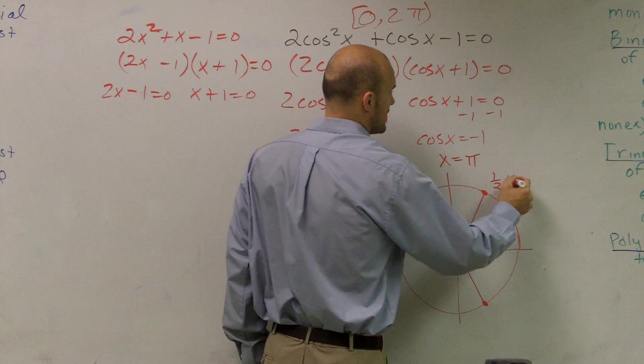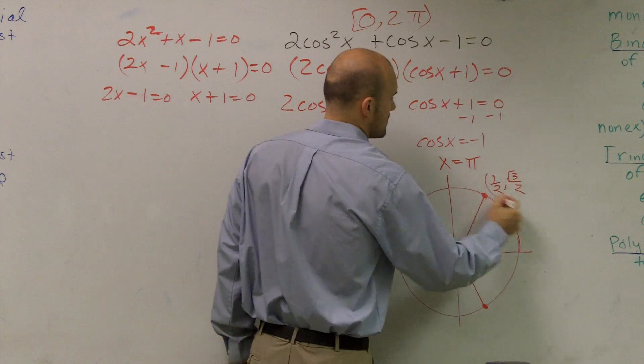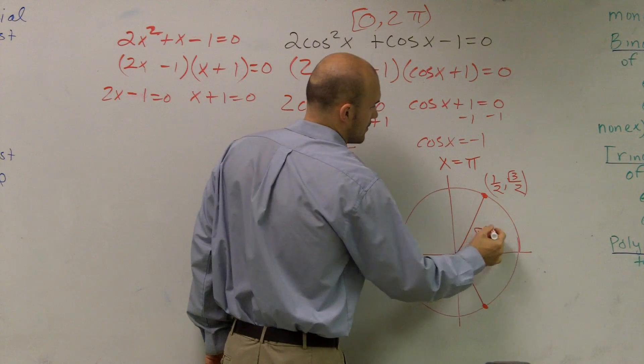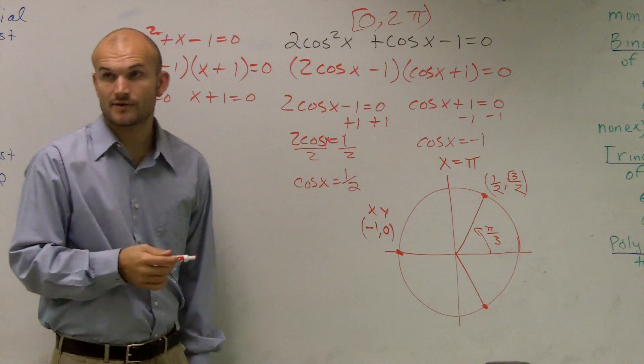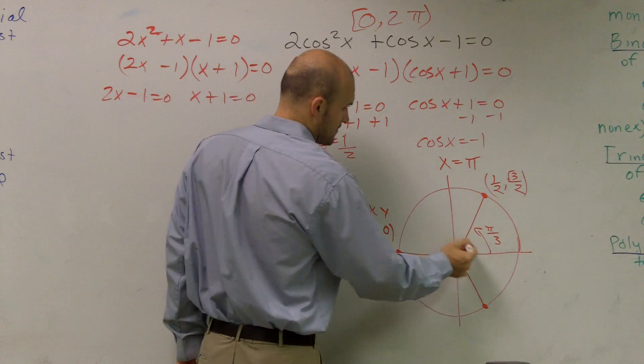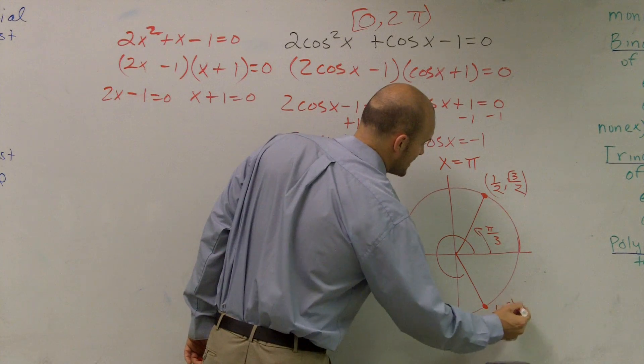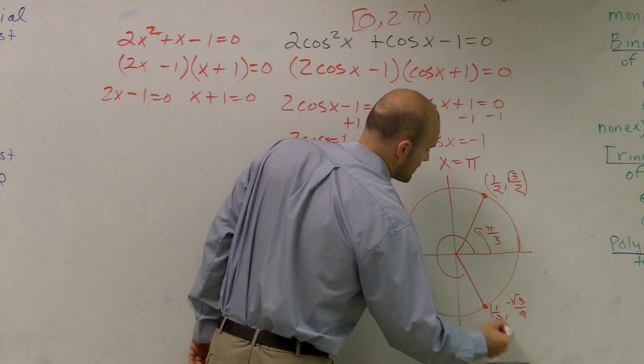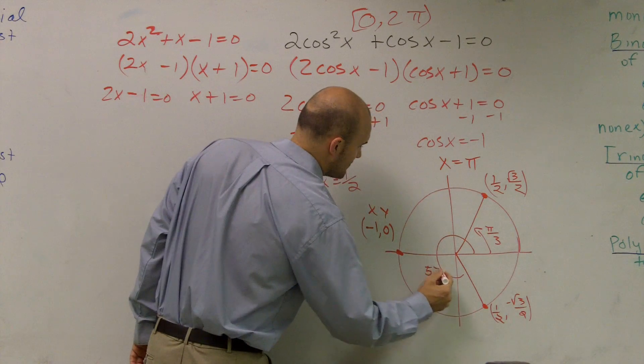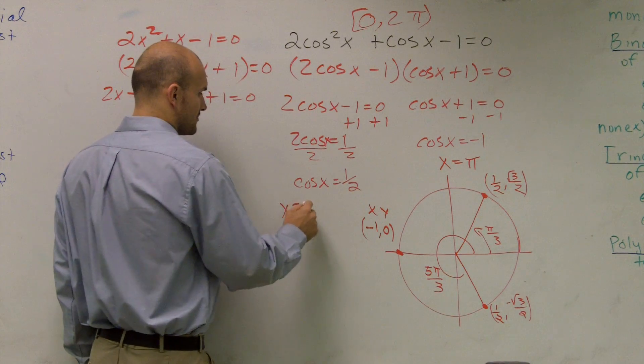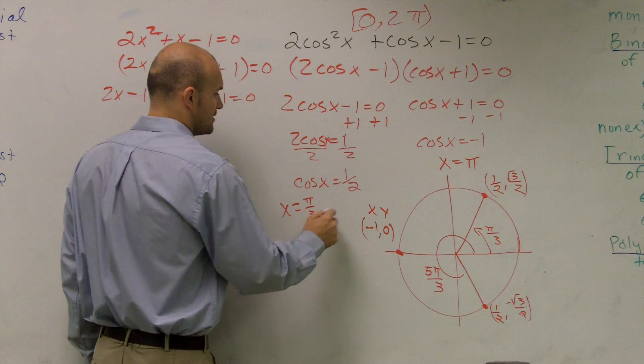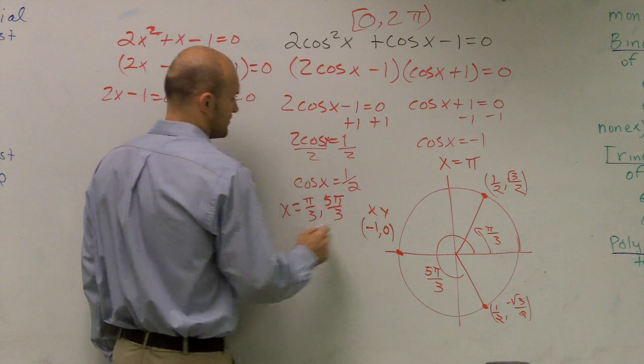This point is comma 1 half radical square root of 3 over 2, which is pi over 3. And then the next point, which is 1 half comma negative radical 3 over 2, which is 5 pi over 3. So then x equals pi over 3 comma 5 pi over 3.